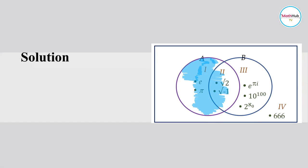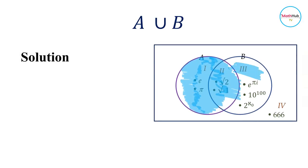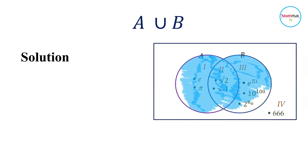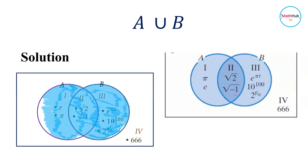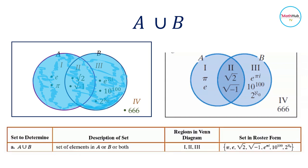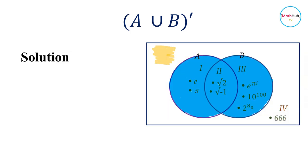For A union B, we list everything in A and everything in B. The elements in region two are in both A and B, so we list them only once. The regions in the Venn diagram that pertain to A union B are regions one, two, and three, and these contain all their corresponding elements.